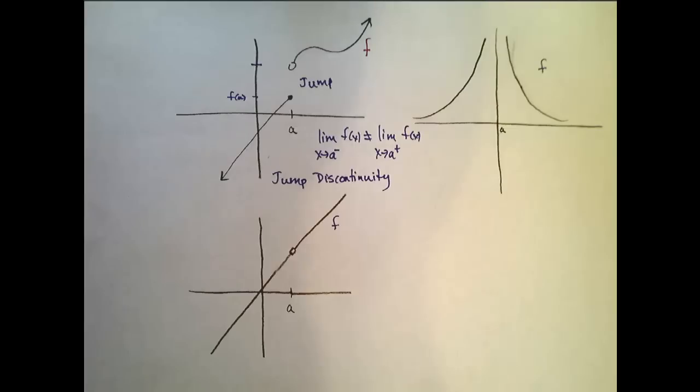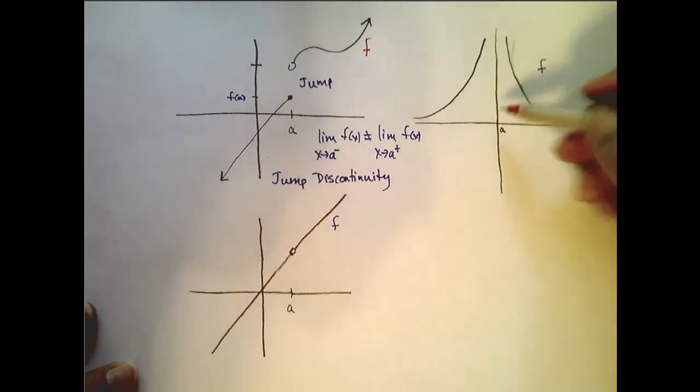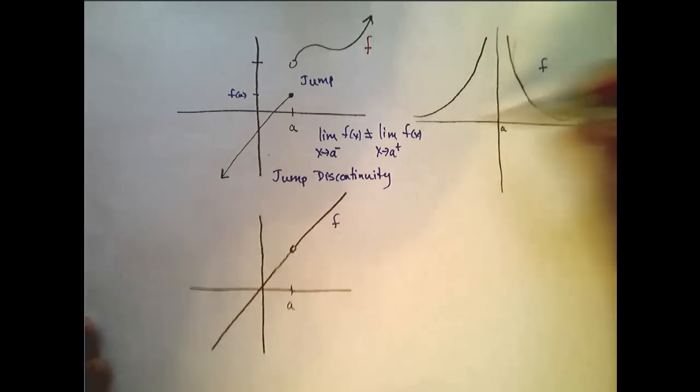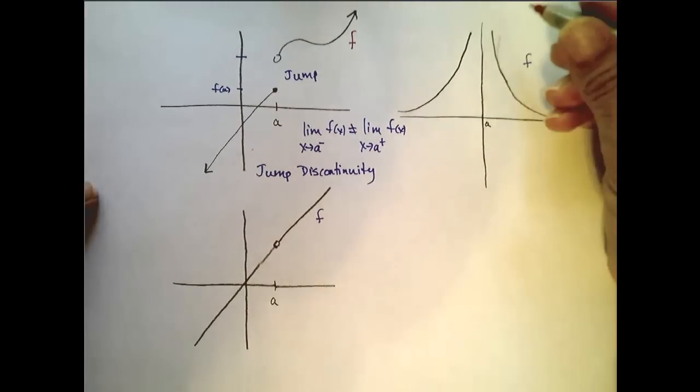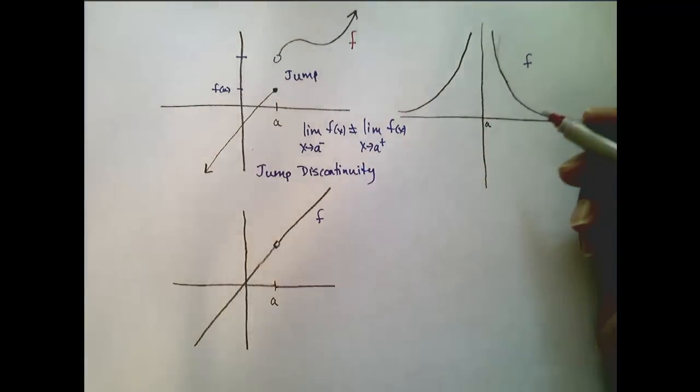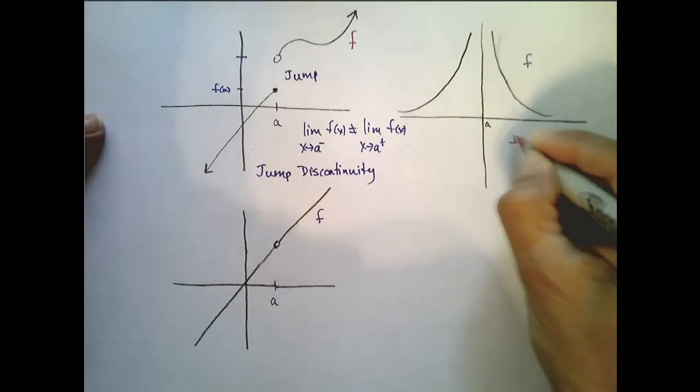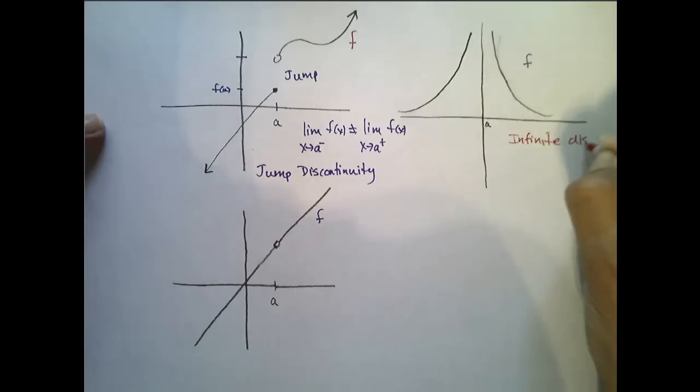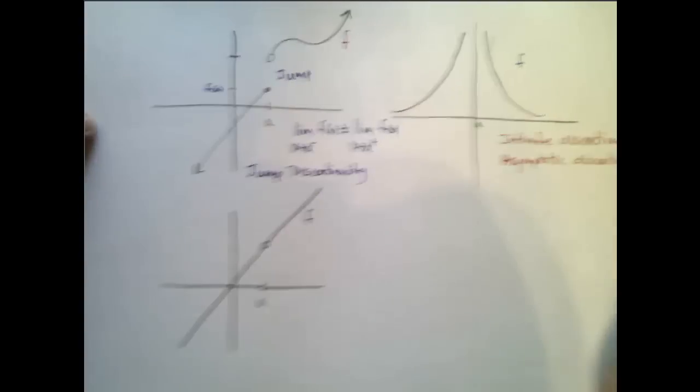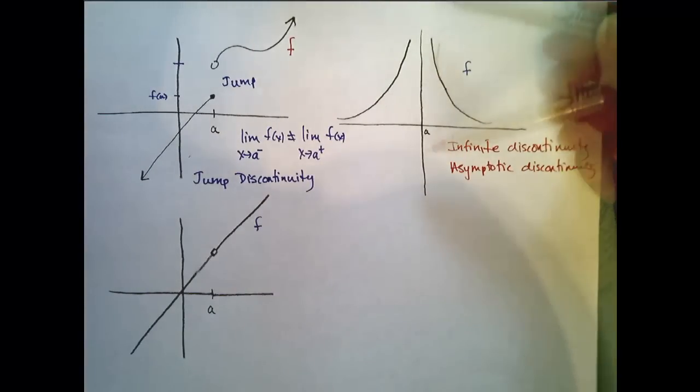Okay, in the second graph, we see that f(a) isn't even defined, right? So the first condition isn't even met. Also, this limit as x approaches a doesn't exist either because it goes off towards infinity. So we could call this kind of discontinuity two different things. We can call it an infinite discontinuity, or you may hear it as an asymptotic discontinuity. Because as I approach a from either the left or the right, my function goes off towards plus or minus infinity, which means that it creates a vertical asymptote.